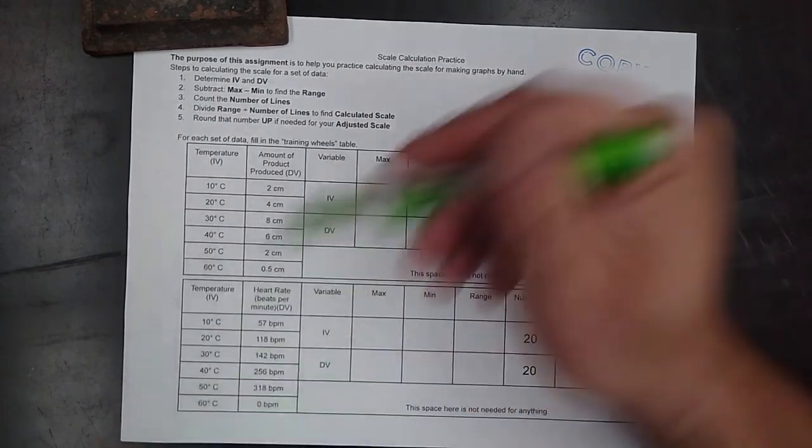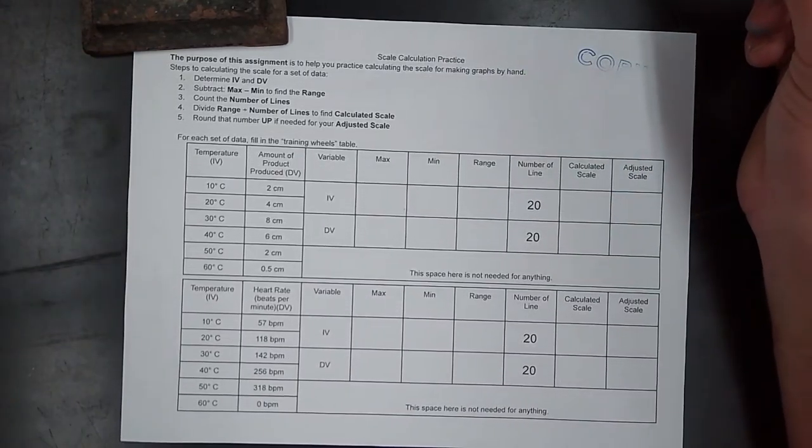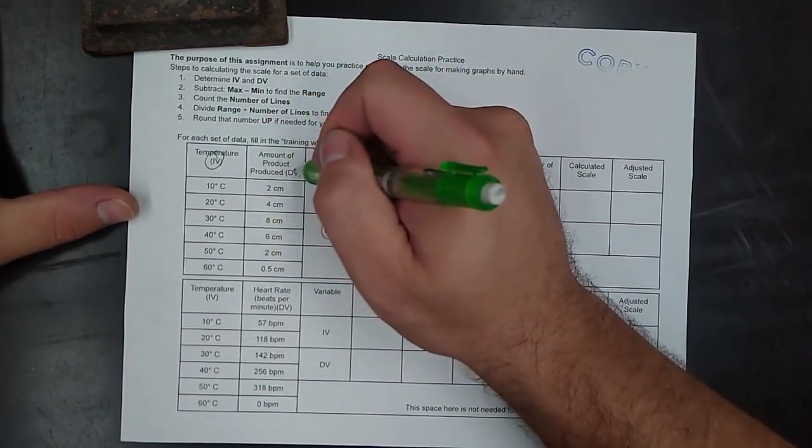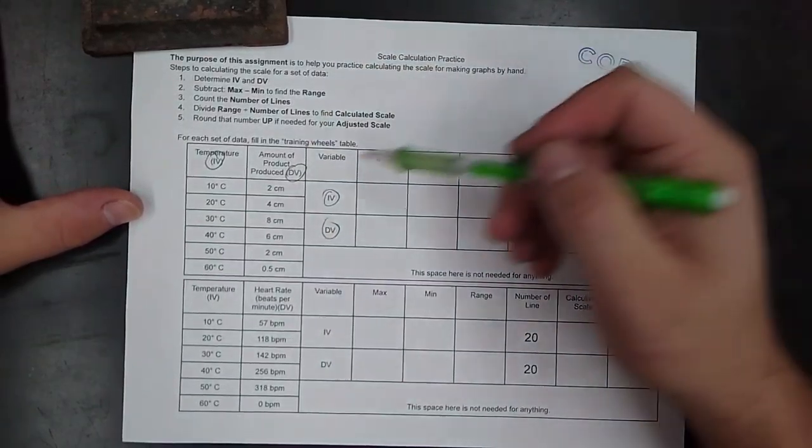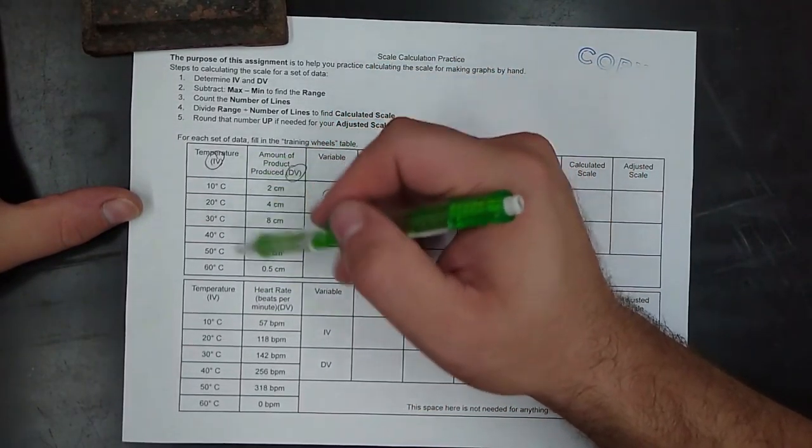For the scale calculation practice, this is super easy. What you need to do to graph your independent and dependent variables are already labeled for you. This is from the variables and controls—this is the data that goes with that experiment.